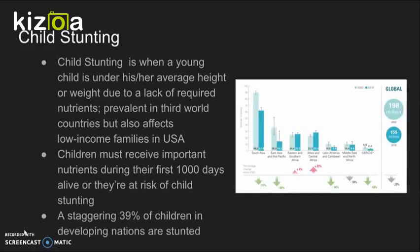Child stunting is when a young child is underweight or below their expected height because they are not receiving the nutrients that they need. It's prevalent in third-world countries in Africa and Asia, but also affects low-income families in the United States. Children have to receive important nutrients in the first thousand days of life; otherwise they are at risk of child stunting and will fall behind in their development. 39% of children in developing nations in Africa and Asia are stunted.